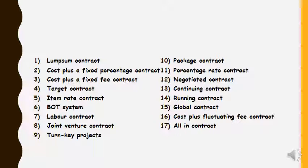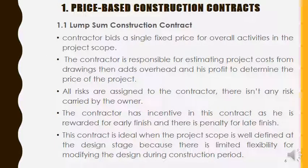The first is price-based construction contract — the lump sum contract. The amount is bid based upon previous experience, so to use a lump sum contract you need to have prior experience. The contractor bids a single fixed price for the overall activity in the project scope. The contractor is responsible for estimating project cost from drawings, then adds overheads and profit to determine the price. In this contract, the contractor assumes all the risk; the owner is free of risk because if the estimation goes wrong, the contractor bears the consequences.